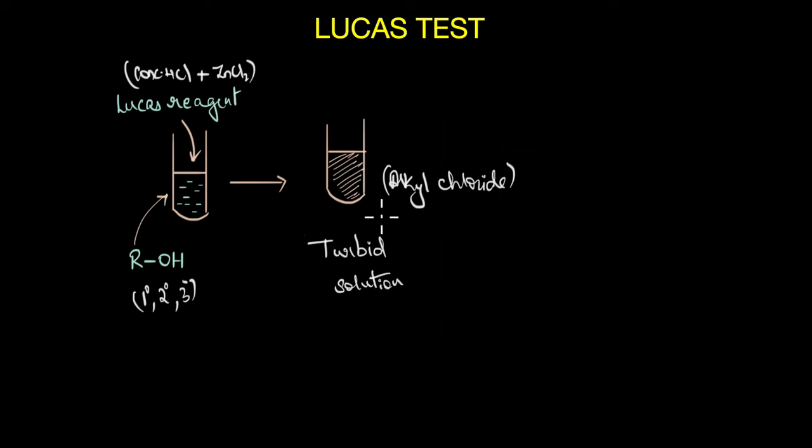That is it looks more like a suspension. Now if you look at the time of reaction between the different types of alcohols and the Lucas reagent, you can see that tertiary alcohols react almost immediately with Lucas reagent and forms a turbid solution under 1 minute. This is because tertiary carbocations are much more stable and the reaction or the turbid solution appears almost instantaneously.